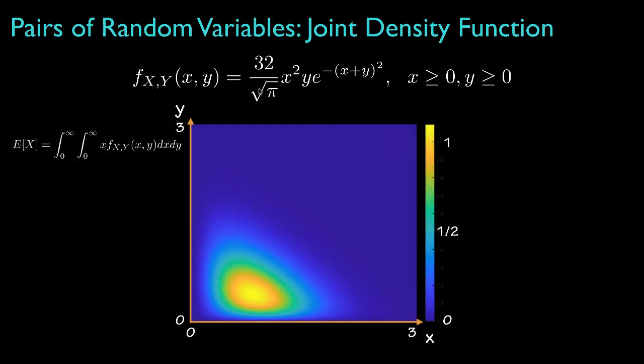Now, let's suppose we'd like to know the average value that X takes. To do that, we'd multiply the density by X and integrate over both of the ranges.